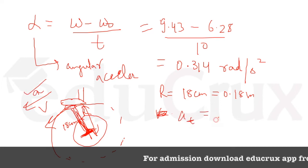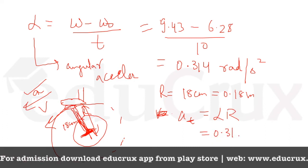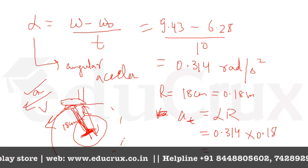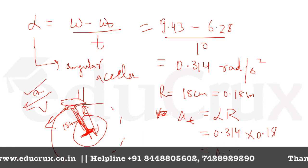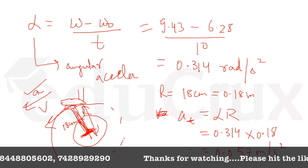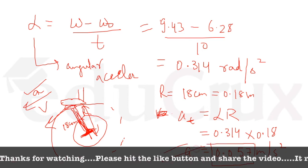Tangential acceleration is equal to alpha into R, which is equal to 0.314 into 0.18. And when we will solve this, this will come out as 0.057 meter per second squared. This is our AT, which is our tangential acceleration. So this is our first part.